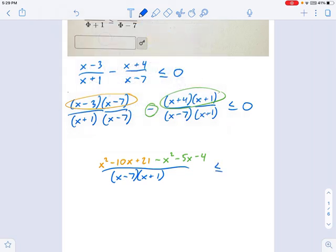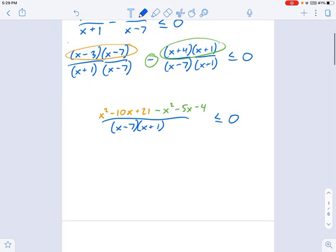Now we can keep on moving. I'm going to simplify this by combining all like terms. So notice the x squareds cancel out. And then I have negative 10x minus 5x. So that's negative 15x, 21 minus 4 is 17, all over x minus 7, and x plus 1.